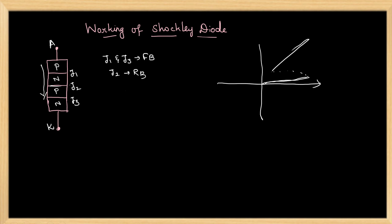J2 also undergoes avalanche breakdown at this time. Now, the diode is in on state. The value of current at which the diode switches to on state is called the holding current.